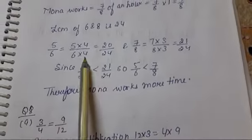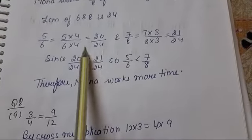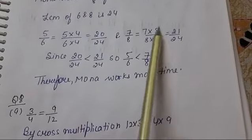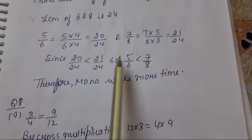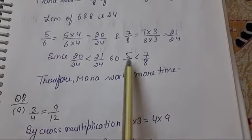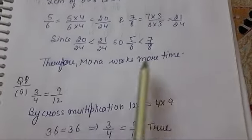LCM of 6 and 8 is 24. Then 5 into 4, we have to make the denominators the same. Multiply by 4 on top and 4 on bottom, and by 3 here as well. So 20 and 21. Which is greater? 21. So 21 is greater, that's why 7 upon 8 is greater. Therefore Mona works more time.